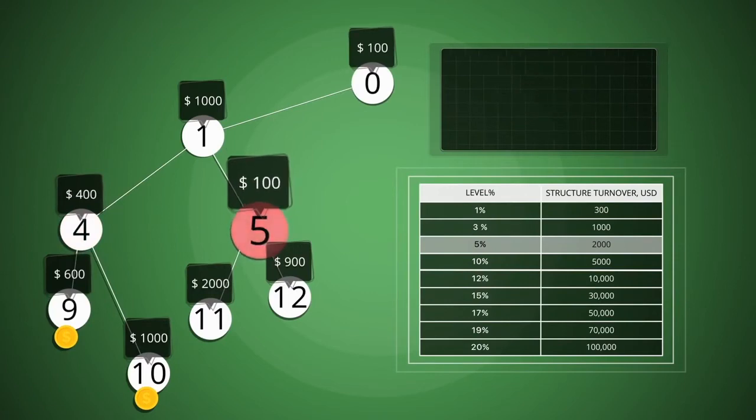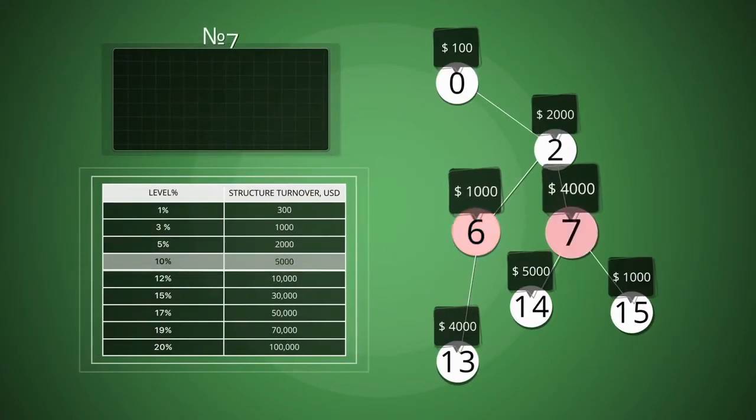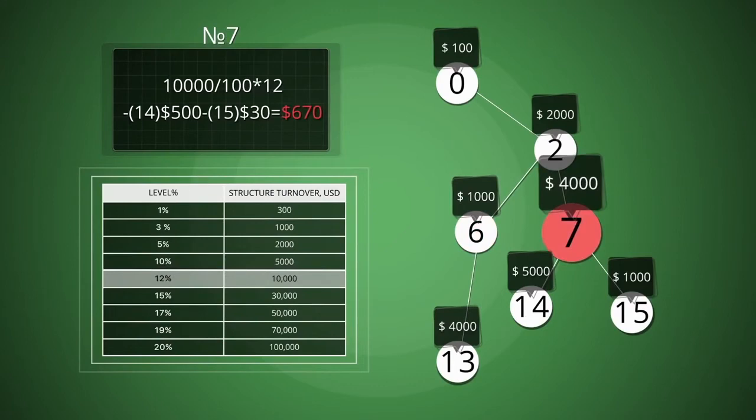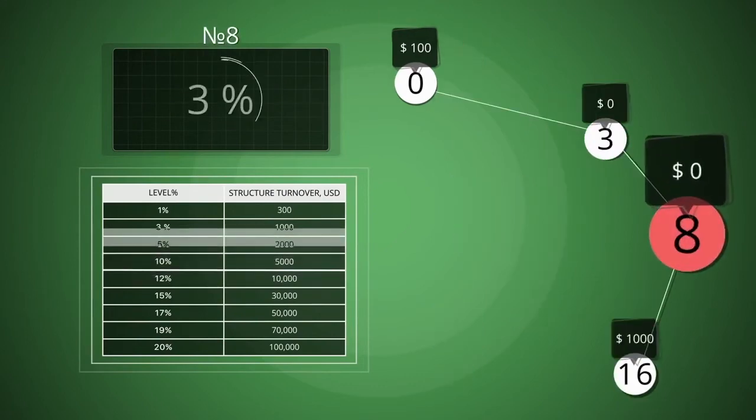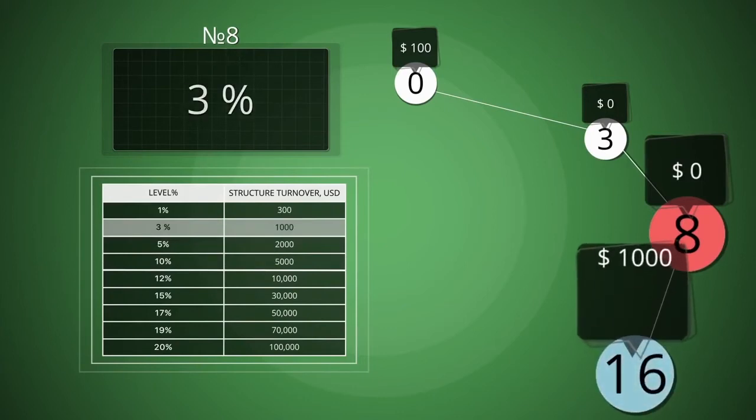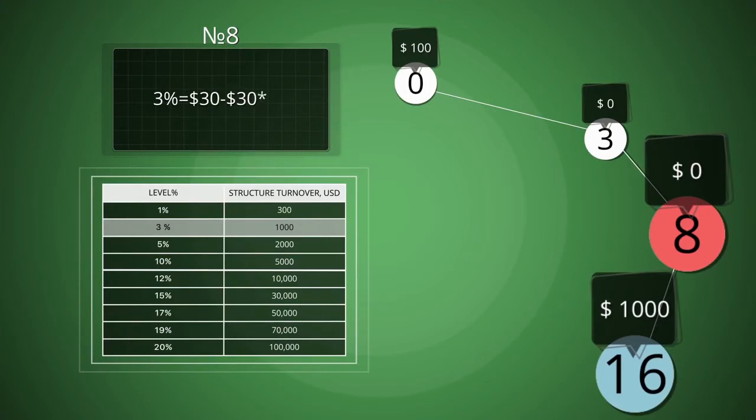For number 5 is $41. For number 6 is $300. For number 7 is $670. Pay attention that number 8 is 3% for the turnover of lower deposit of $1,000. But this is his only guider. Actually, he did not make any deposits. His 3% is equal to $30. Number 16 bonus is equal to zero.